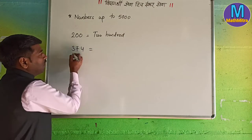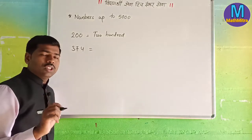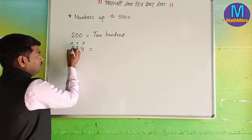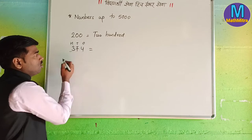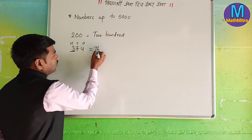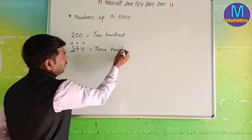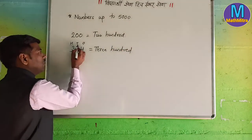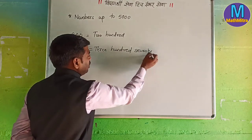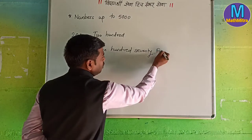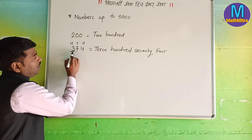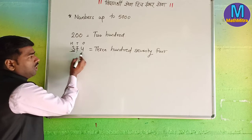3, 7, 4. How much is it? It is so easy. This first number is in the ones place. It is in the tens place. It is in the hundreds place. So ones, tens, hundreds — 3 is in the hundreds place, which means 300. Then 7 in the tens place means 70. And 4 in the ones place. So we can read this number as 374.